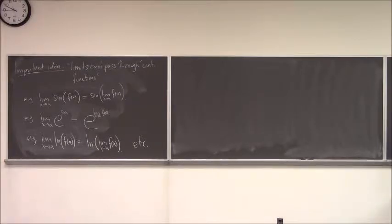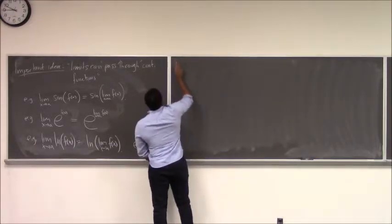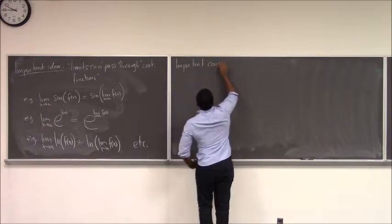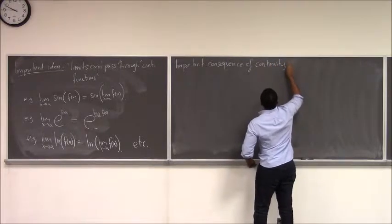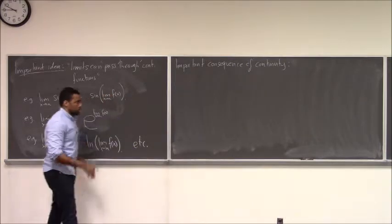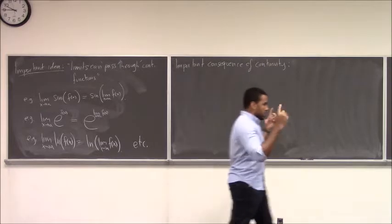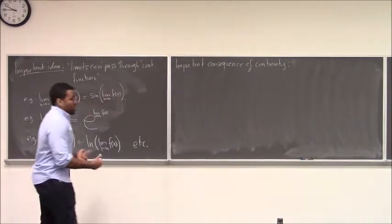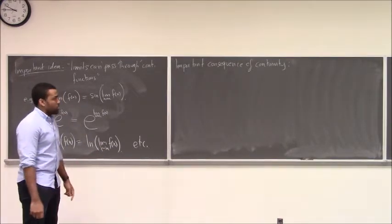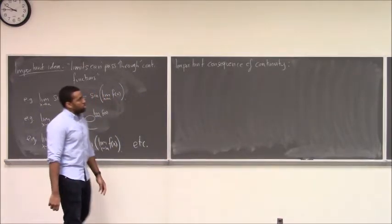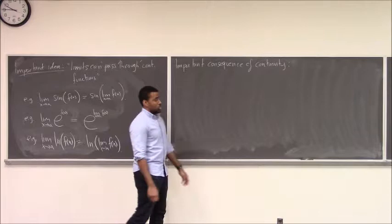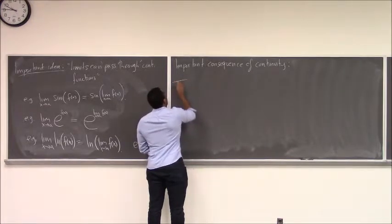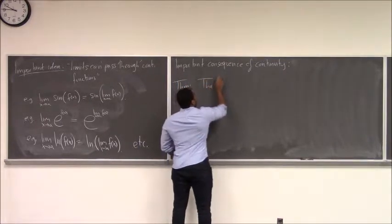Now I want to end this section with an important consequence of continuity. This is a theorem - one of the big theorems of the semester. It's one of those really important things; if you go through Calc 1, this is one of the things everyone expects you to know, along with derivatives. We're not going to prove it, because even the easiest proofs use something called the completeness axiom of real numbers. It is called the Intermediate Value Theorem.